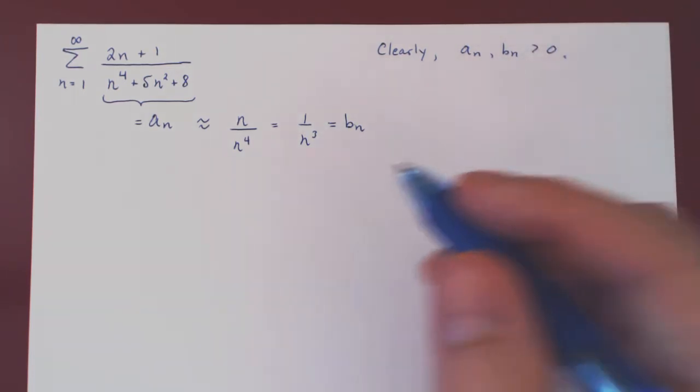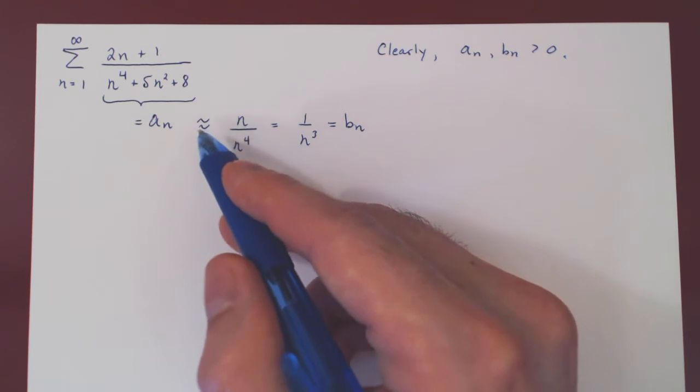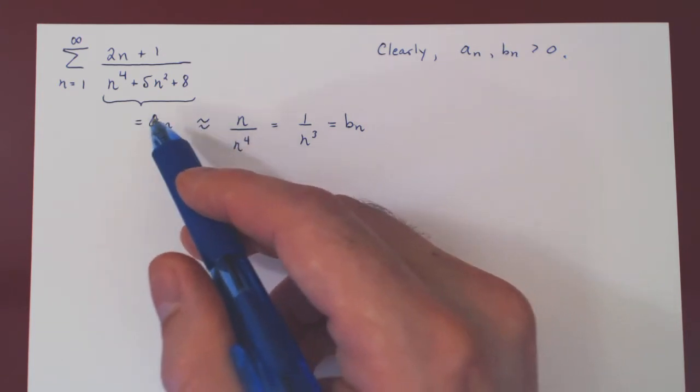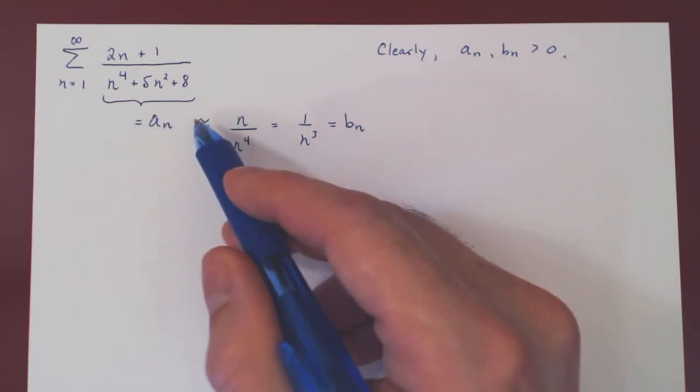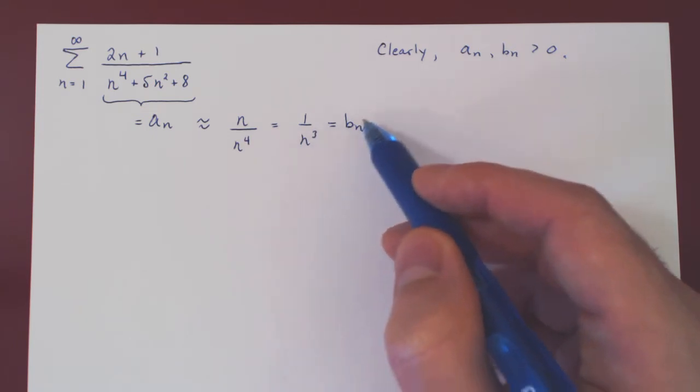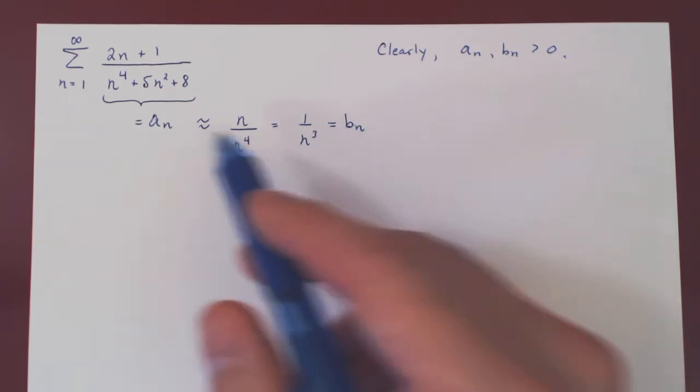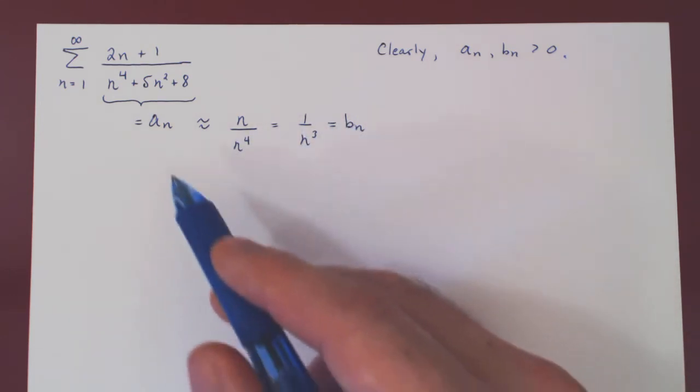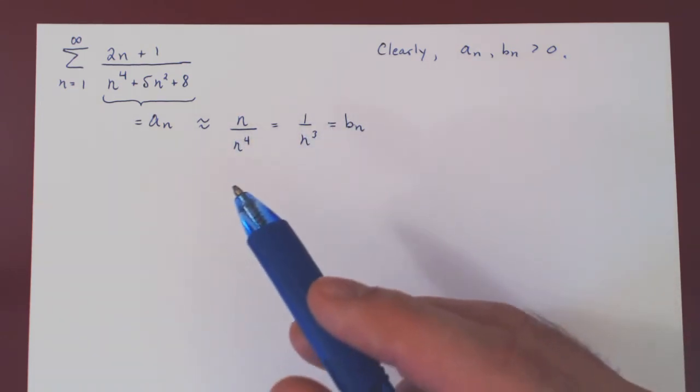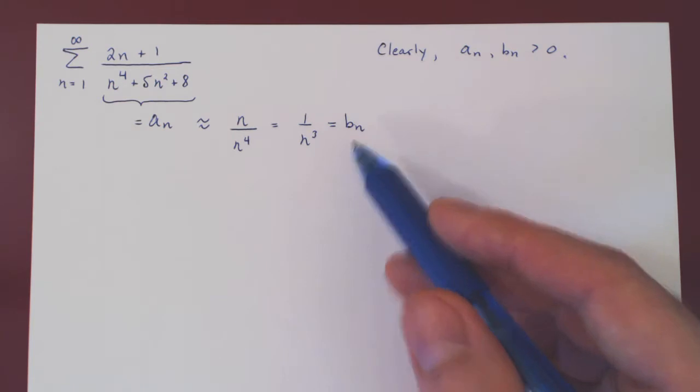And the only other thing to check is that our intuition is correct. We are claiming that AN, when N is large, is roughly 1 over N cubed, roughly BN. And we can show this by looking at the limit of AN over BN. If the limit is a positive number, our intuition is correct and we are essentially done.